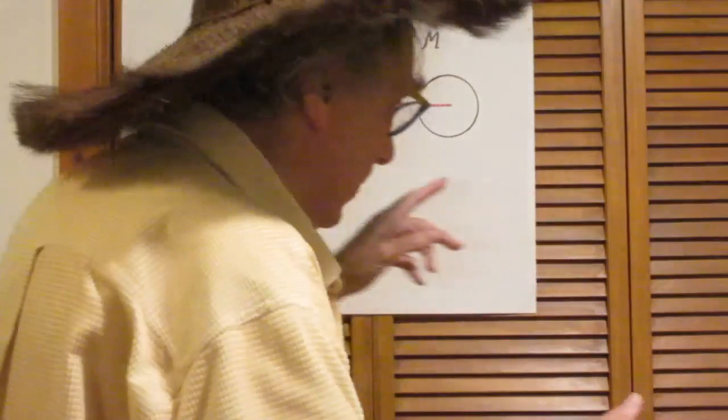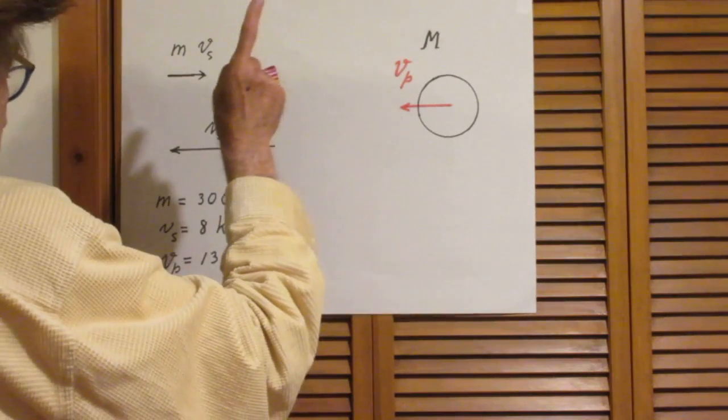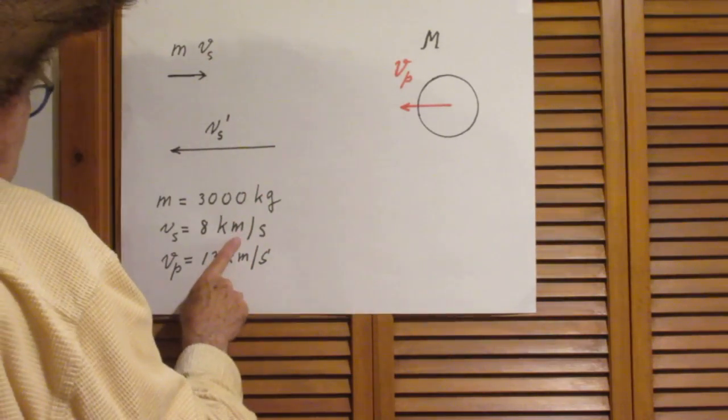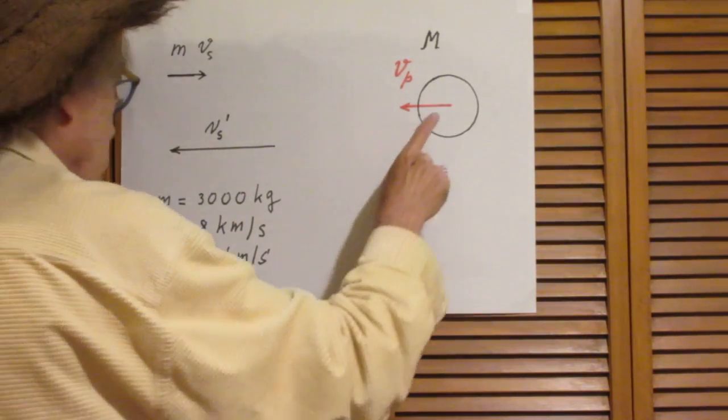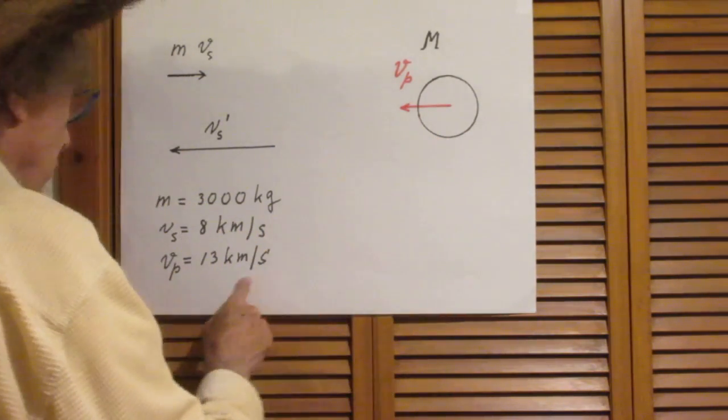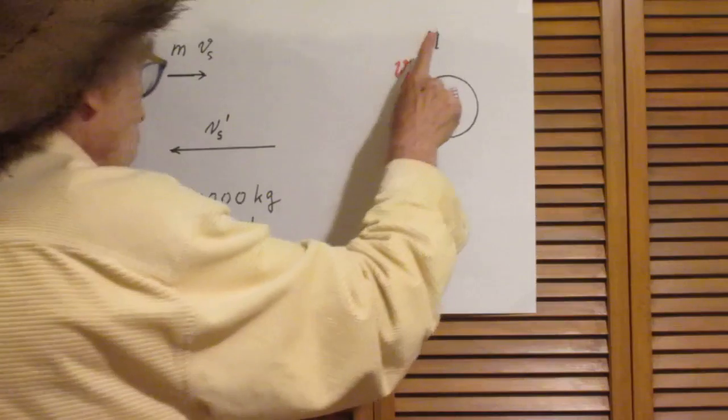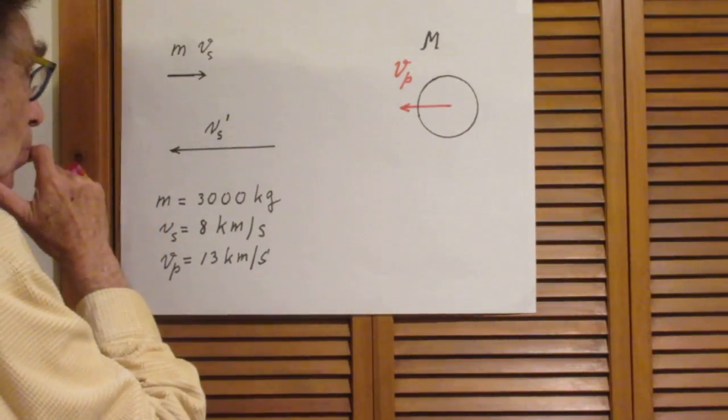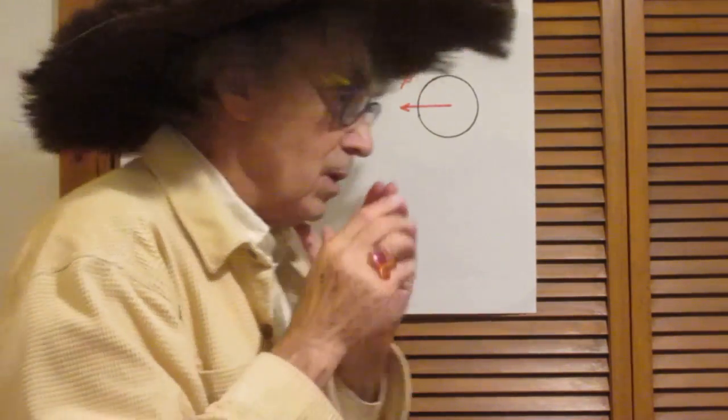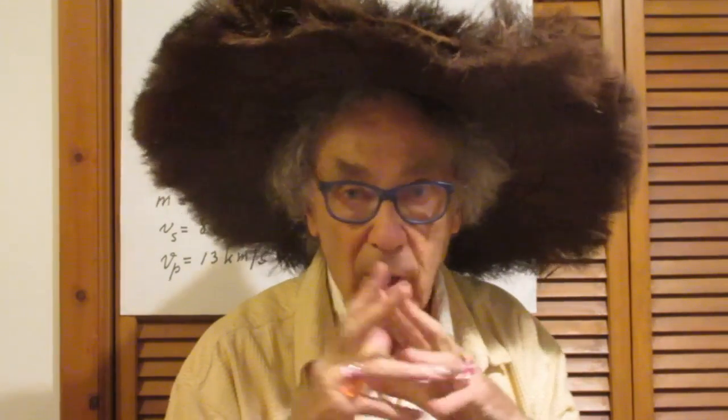So this will be a perfect elastic collision and the question is we know M 3000 kilograms. We know the speed of the satellite 8 kilometers per second, and we know the speed of this planet. This planet happens to be Jupiter and the orbital speed of Jupiter is 13 kilometers per second. You can look up the mass of Jupiter. It's very very large, but I will leave you with that.